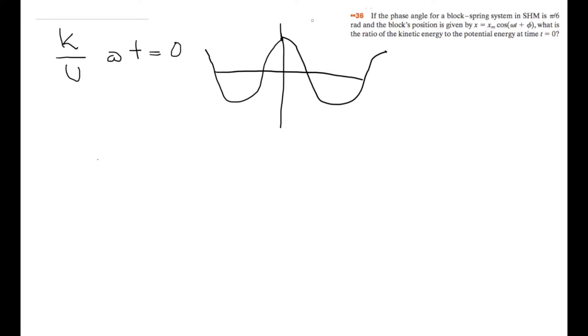But we have a phase angle of π/6 radians. So that means we're translating the graph to the left as it's a positive angle. So we'll redraw this. The peak is to the left here, and this peak here is negative π/6. So that means at time t equals 0, we have a different height. So we do have kinetic energy because it's not maximum potential energy.